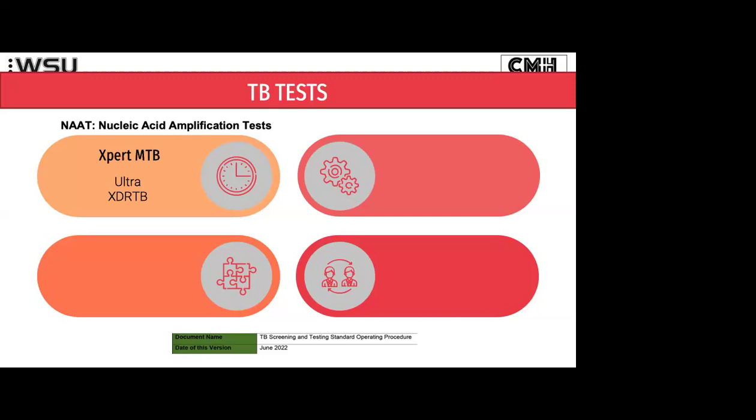The famous one is the Xpert MTB. We're going to spend quite a bit of time on that. You're all very aware of using line probe assays. Line probe assays might slowly be replaced by the GeneXpert XDR-TB experts. We have a first-line line probe assay which tests for rifampicin and INH, and second-line line probe assays which traditionally test for fluoroquinolones and the injectables from the old days.